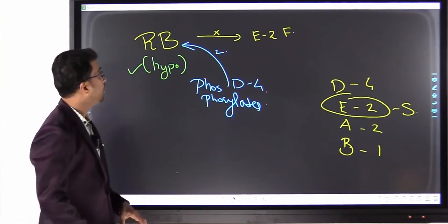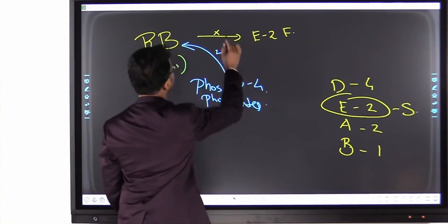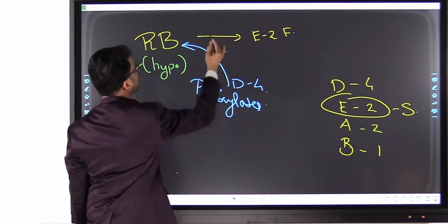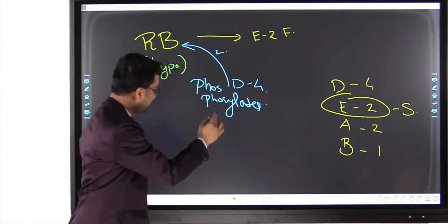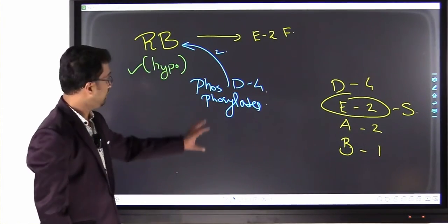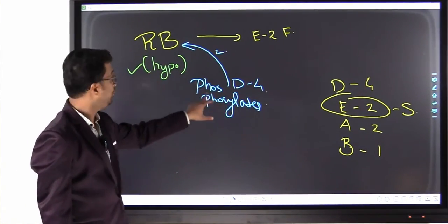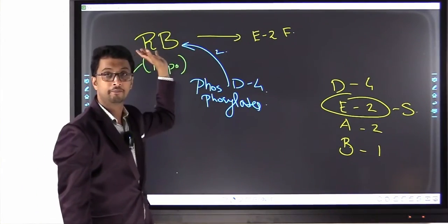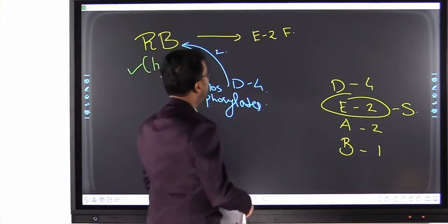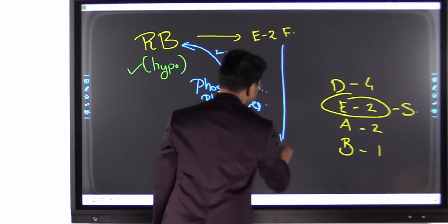When it becomes inactive, what is going to happen? This is lost. This inactivation is lost. Now E2F is active. Isn't it? So it phosphorylates, the D4 phosphorylates and inactivates RB gene and thus the suppression is lost. Suppression on the E2F is lost. So what happens?